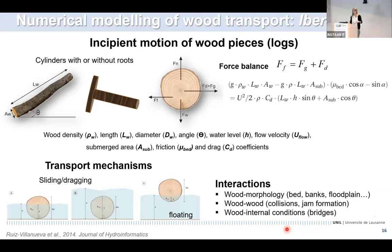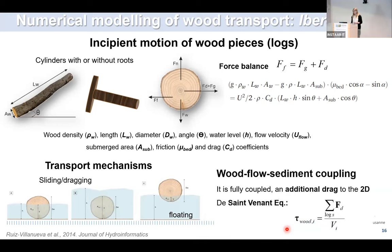The model also includes interactions between the wood and the river geometry and morphology, interactions between the wood pieces themselves assuming elastic or inelastic collisions, and interactions between the wood and hydraulic structures like bridges. The module is fully coupled, meaning the presence of wood has an influence on the hydrodynamics, and the hydrodynamics control the motion of the wood pieces. We did this by adding drag to the Saint-Venant equations.